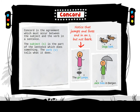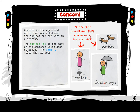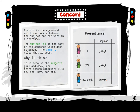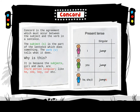Notice that 'jumps' and 'lives' end in an S, but not 'bark'. Why is this? It is because the subjects 'girl' and 'Jack' are third-person singular, like he, she, boy, car, etc.